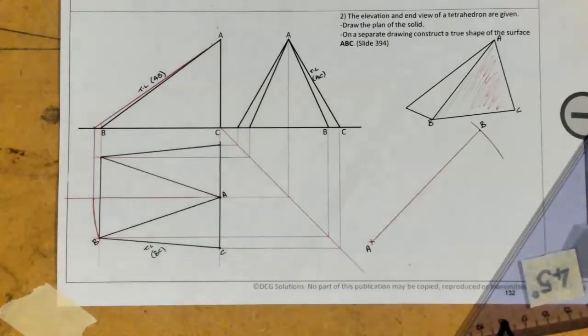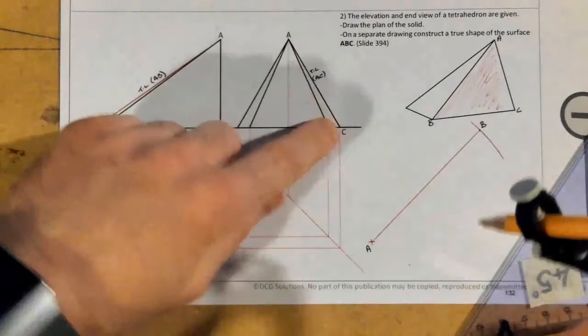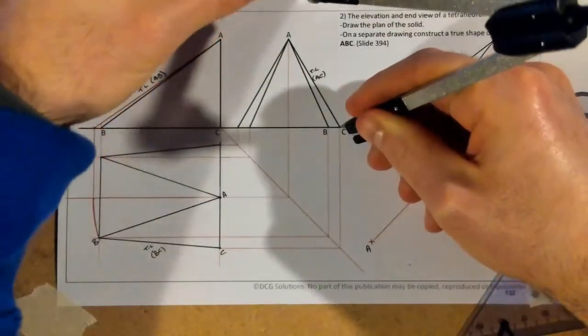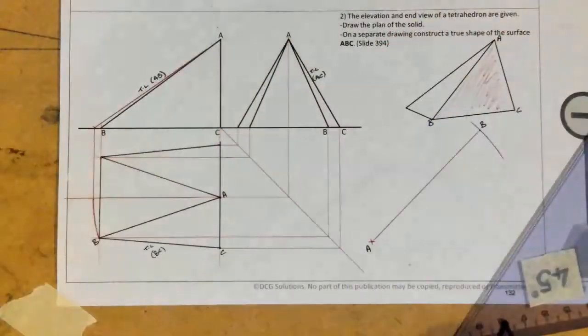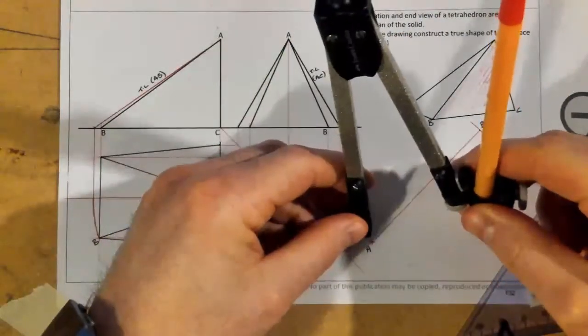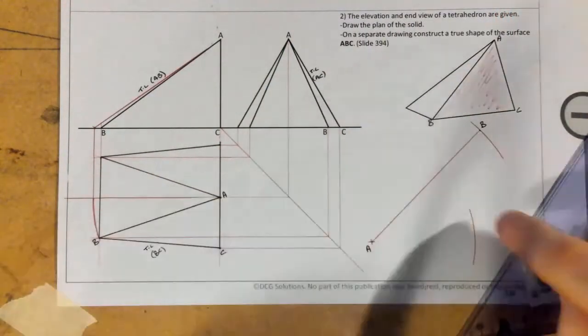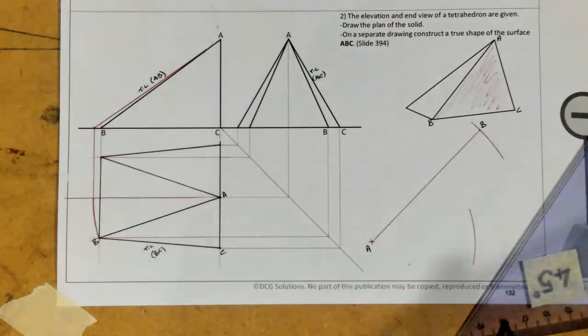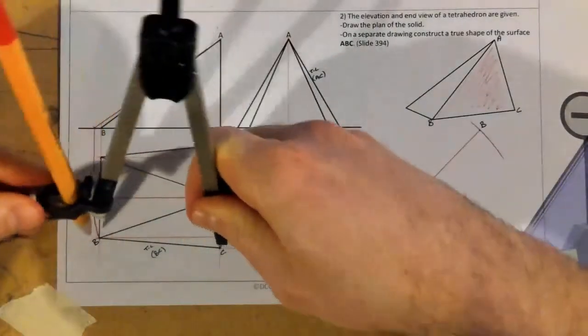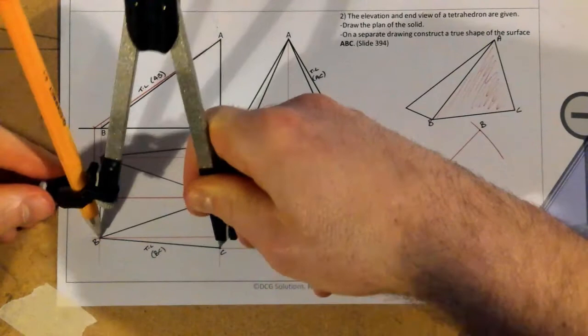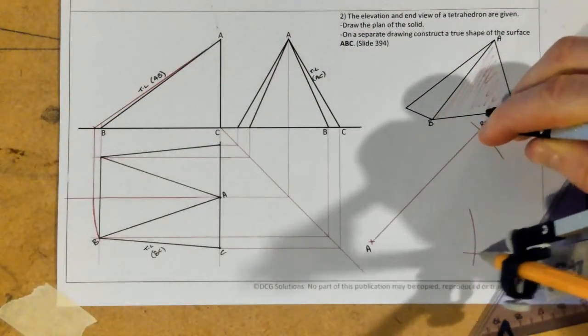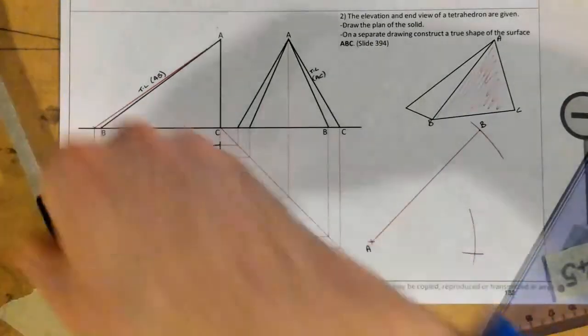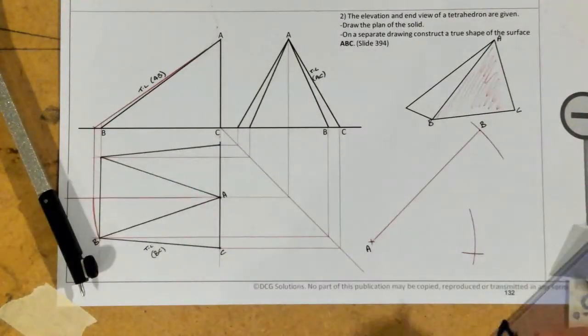And now what I have to do is I'm going to get the line A, C. That's true length from A to C. So from A, somewhere in there is going to be C. And now I have to get the line B, C, that distance there, and somewhere on B. And there we go. And where the two arcs cross each other, that is my C.